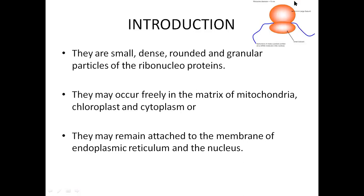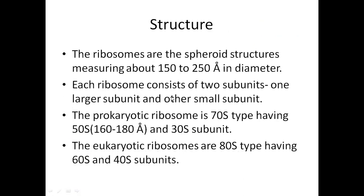This cartoon structure of the ribosome shows the small and large subunit associated with the mRNA. The main intention of this class is to explain the ultra structure of the ribosome. The ribosome itself has an outer structure that is spheroid in nature and measures about 150 to 250 Angstrom units in diameter. Very importantly, the ribosome has two important subunits: a larger subunit and a smaller subunit.